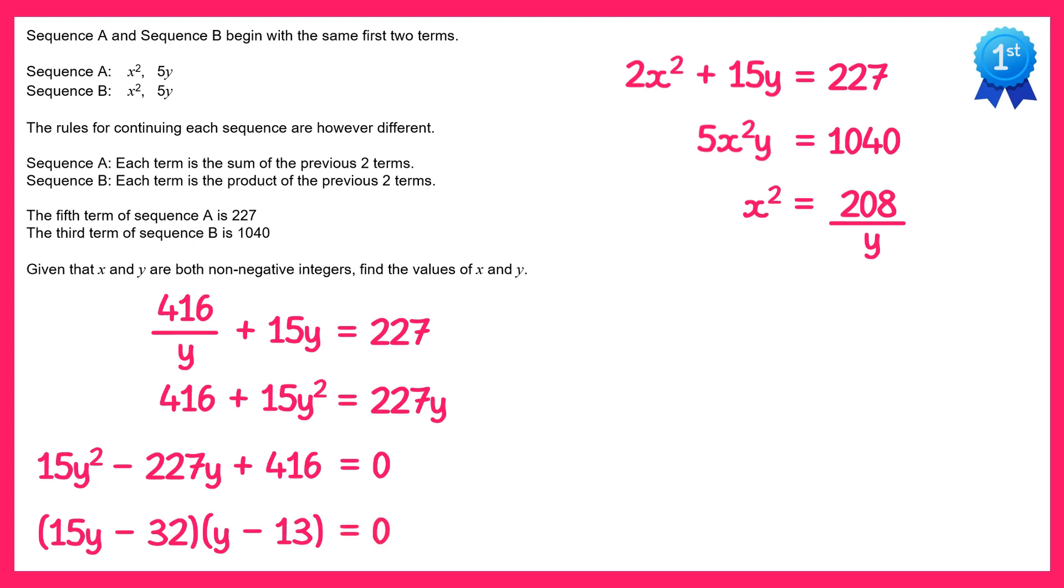So this will give you two solutions. Now the second bracket is a bit easier, you just get y equals 13, and the first bracket you would get y equals 32 over 15. But the question says that x and y are both non-negative integers. 32 doesn't divide by 15 so that's not an integer, so we can lose that part of the solution.